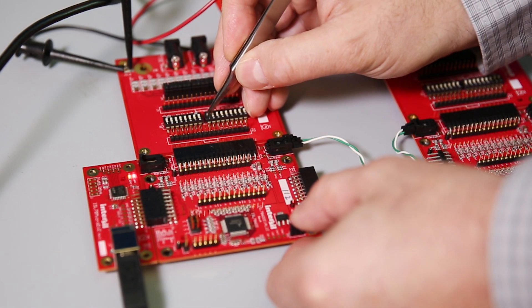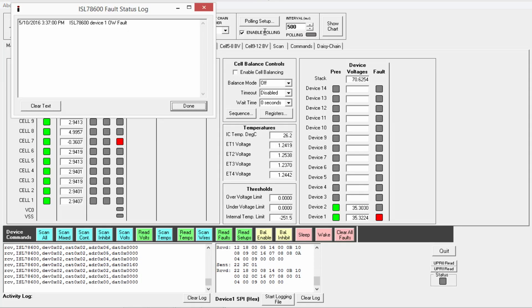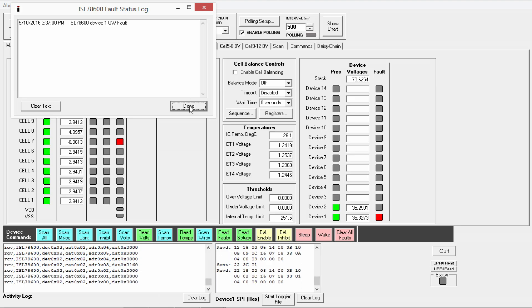I'll demonstrate an open wire conditioning using this dip switch. You can see the GUI is now reporting a fault and there's a useful LED indicator on the eval board itself.